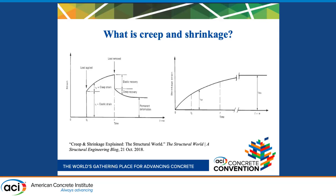Shrinkage is a strain which occurs due to moisture loss in the concrete, and there are two primary types of shrinkage: drying and autogenous. Drying shrinkage occurs due to water leaving the concrete, and autogenous shrinkage occurs when water is consumed due to internal chemical hydration reactions called self-desiccation. Concrete submerged in water can swell, which increases the volume of a member, and we call this swelling.